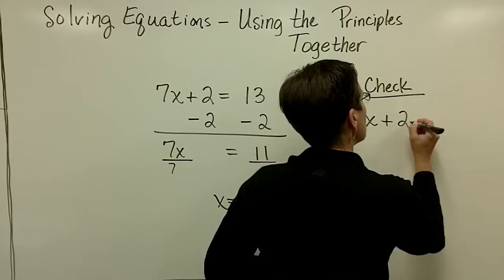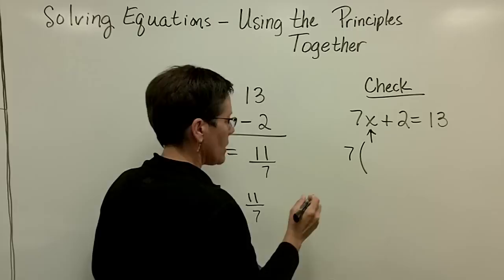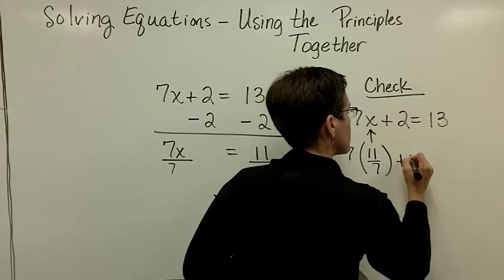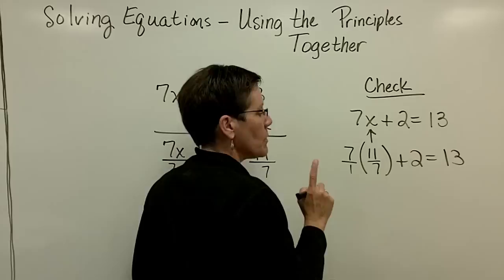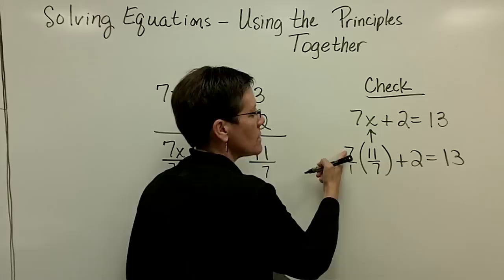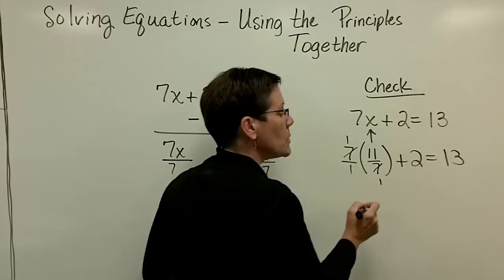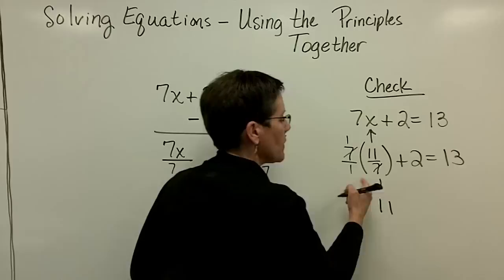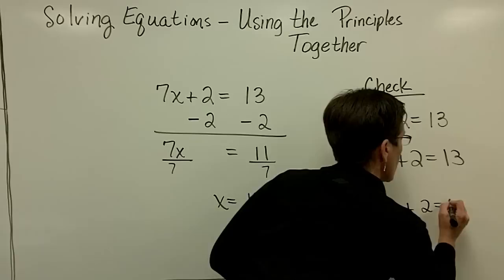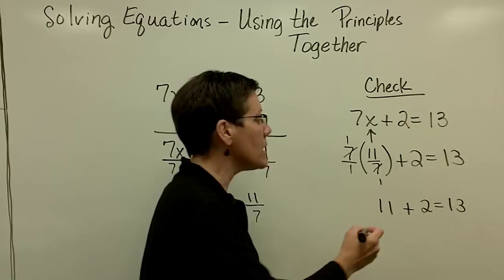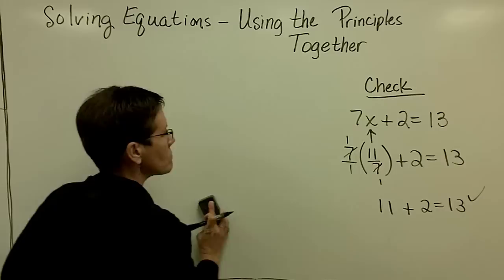So let's go ahead and take this one and check it. So I have the original problem, 7x plus 2 equals 13, and I want to put 11 sevenths right here in for x. I think I'm just going to stick a 1 underneath that 7, and that 7 is an integer in the numerator over that 1. We can just notice here that we can remove those common factors, one on the top and one on the bottom, and what we're left with in the numerator is 11. I want you to tell me if 11 plus 2 is indeed equal to 13, and if so, you can just stop and say, yep, I checked that, that is a true solution to this equation.